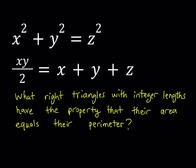The problem is: what right triangles with integer lengths have the property that their area equals their perimeter? So we're looking for right triangles with this special property and the x, y, and z are the side lengths where z is the hypotenuse, the longest length in the triangle.